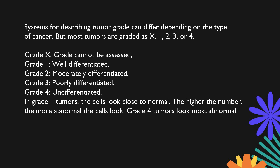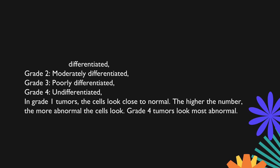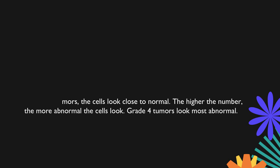Grade X means grade cannot be assessed. Grade 1 is well differentiated. Grade 2 is moderately differentiated. Grade 3 is poorly differentiated. Grade 4 is undifferentiated. In grade 1 tumors, the cells look close to normal. The higher the number, the more abnormal the cells look. Grade 4 tumors look most abnormal.